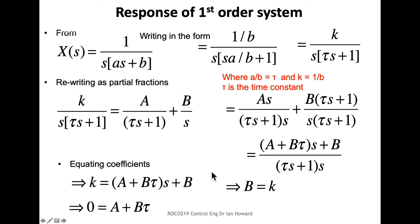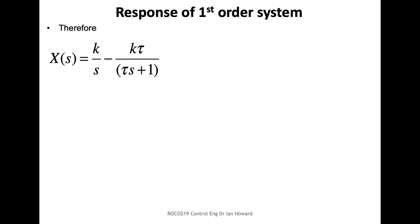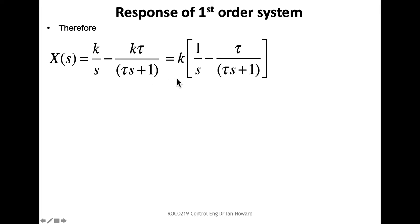Correspondingly, since there are no s-coefficients on the left, 0 equals A + B*tau, so A equals minus B*tau, which means A equals minus k*tau. Starting from X of s, we can write it as k times [1/s minus tau/(tau*s + 1)].